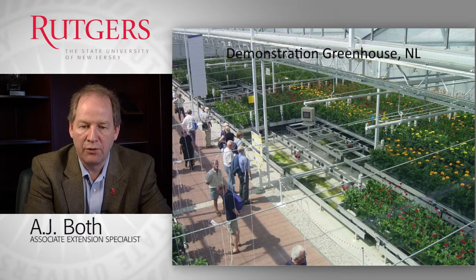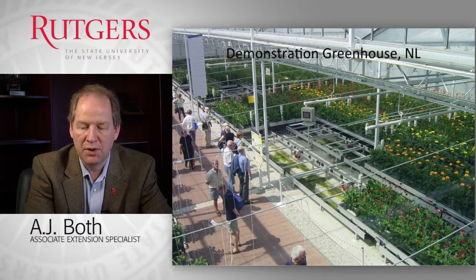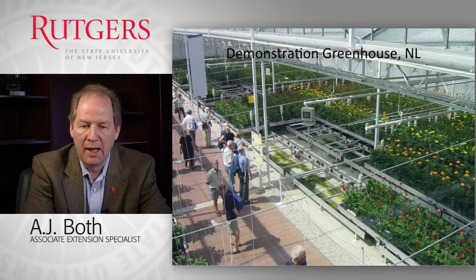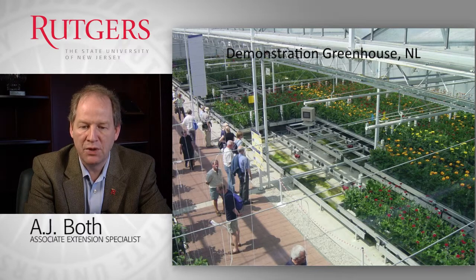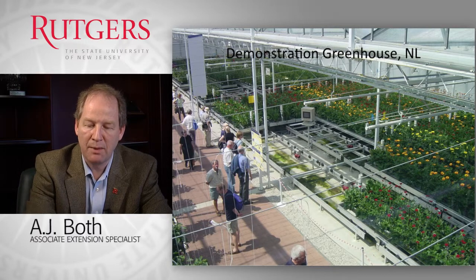Some greenhouses are designed for very special purposes. Here you see an example of a demonstration greenhouse in the Netherlands where they demonstrated the movement of tables to a central irrigation station. Each table was entered into a computer system and then depending on environmental conditions — particularly solar radiation and temperature — the computer decided when it was time for each table to be irrigated and then moved the table to a fixed irrigation station where water and nutrients were applied to each individual bench, after which the bench was moved back into the greenhouse environment. A highly automated system.